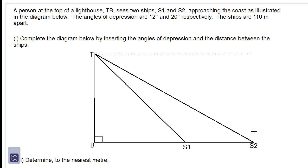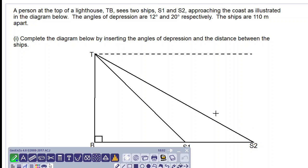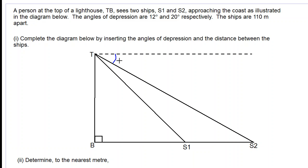The person looks down and sees two ships, S1 and S2, approaching. The angles of depression of the ships are given. I believe that 12 degrees pertains to S2 and the 20 degrees must pertain to S1.